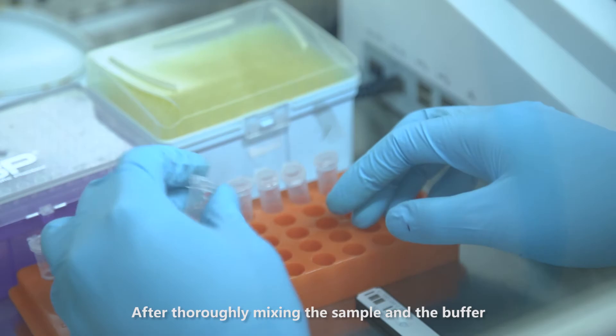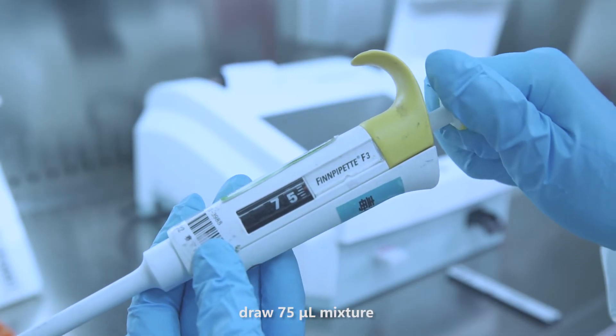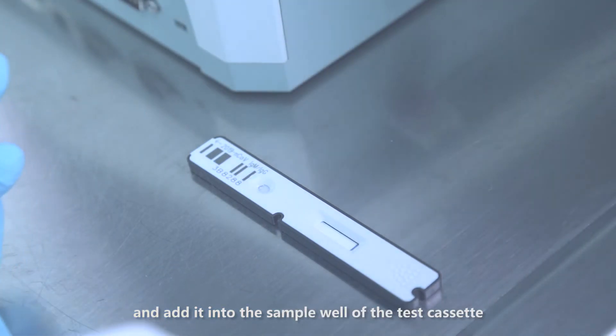After roughly mixing the sample and the buffer, draw 75 microliters of mixture and add it into the sample well of the test cassette.